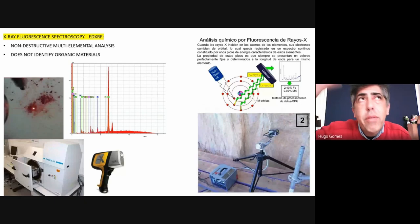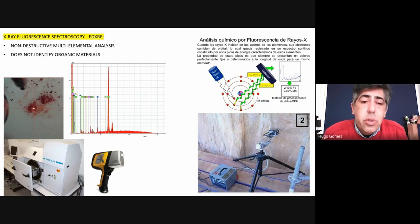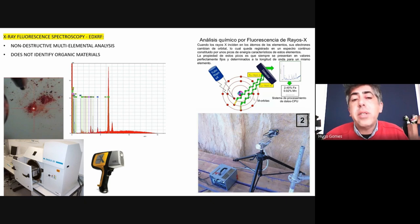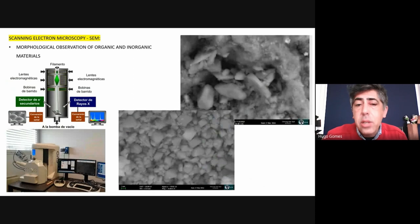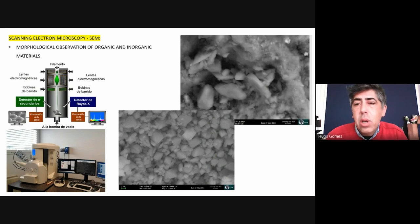X-ray fluorescence is a non-destructive, multi-elemental analysis. In portable form applied to a cave wall, however, if the paintings are covered with calcite layers, the apparatus only identifies the calcite layer and does not give the real composition of the pigment inside the wall. It is most useful when applied to collected samples — identifying quantities of iron, aluminium, and other chemical elements. SEM can give us information about grain type: whether the grain is in natural form, was ground, or was heated and altered.